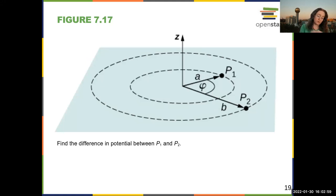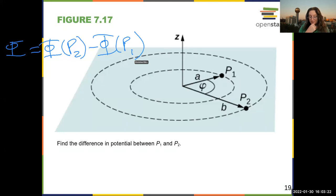Here we don't have to do anything too hard in finding the potential between points P1 and P2. It's going to be the potential at P2 minus the potential at P1. It's always final minus initial.